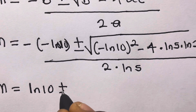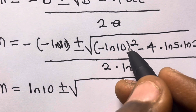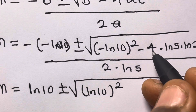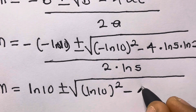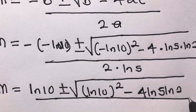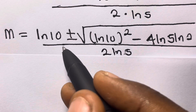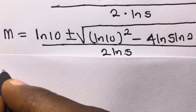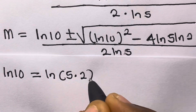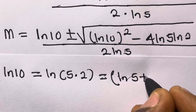So minus of minus ln10 gives us plus ln10. The term (−ln10)² gives us ln10². And we have minus 4·ln5·ln2 underneath the square root, all divided by 2·ln5. Now we need to evaluate ln10² — since ln10 = ln(5×2) = ln5 + ln2, we have ln10² = (ln5 + ln2)².